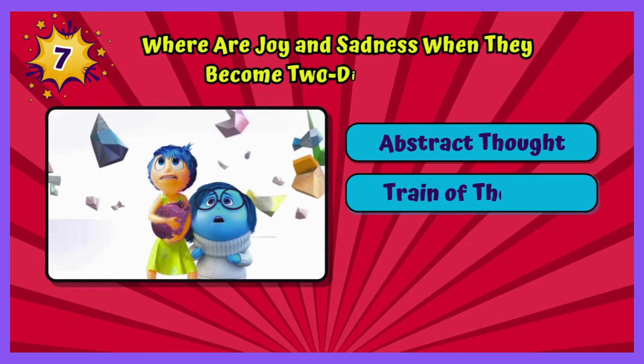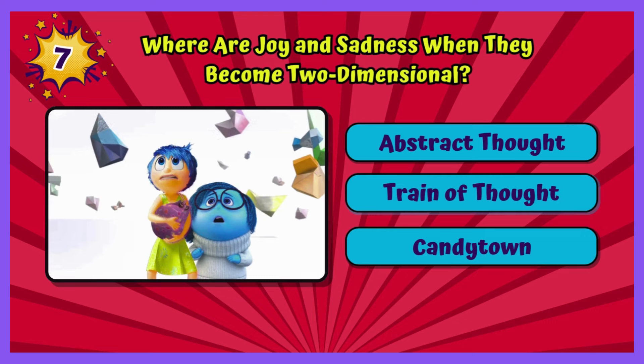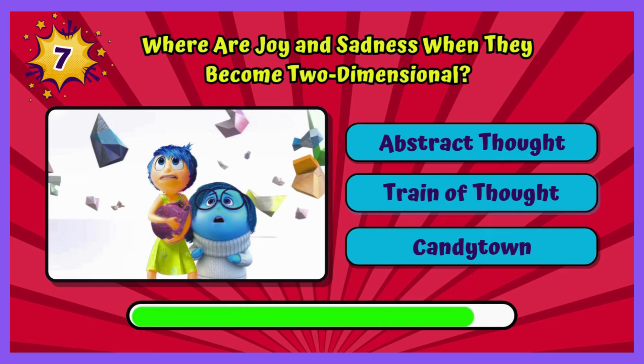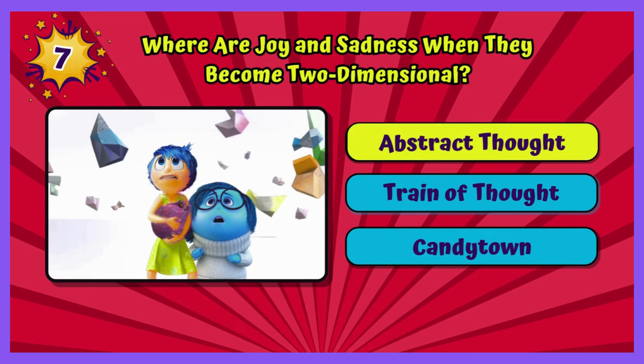Where are Joy and Sadness when they become two-dimensional? They are in Abstract Thought. A tricky one but fascinating, right?